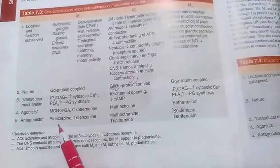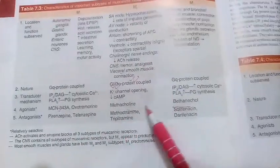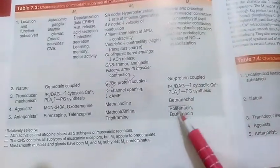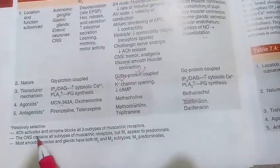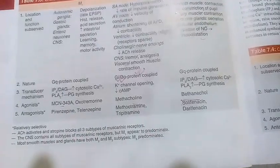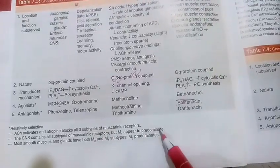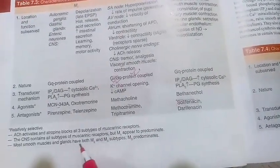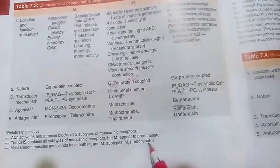For antagonists: M1 antagonists are pirenzepine and telenzepine; M2 antagonists are methoctramine and tripitramine; M3 antagonists are solifenacin and darifenacin. Key points: acetylcholine activates and atropine blocks all three subtypes. The CNS contains all types of muscarinic receptors but M1 appears to predominate. Most smooth muscle and glands have both M2 and M3, but M3 dominates.